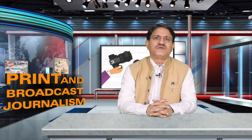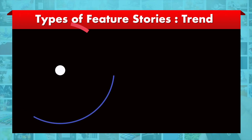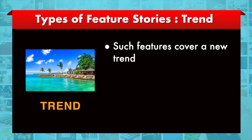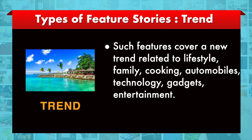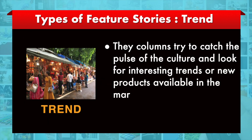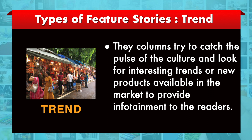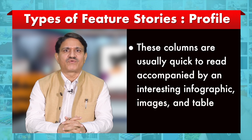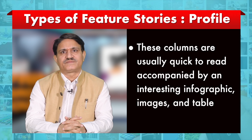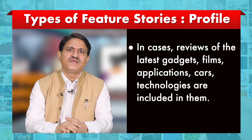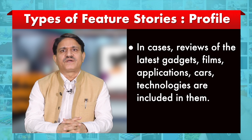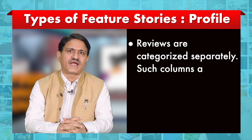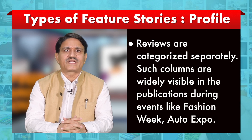The more the severity of an event, the more spot features are done to analyze the magnitude of the issue and provide insights to readers. The next type is the trend feature. Such features cover a new trend related to lifestyle, family, cooking, automobiles, technology, gadgets, or entertainment. These columns try to catch the pulse of the culture and look for interesting trends or new products available in the market to provide infotainment to readers. They are usually quick to read, accompanied by interesting infographics, images, and tables, and may include reviews of the latest gadgets, films, applications, cars, or technologies, though in some cases reviews are categorized separately.